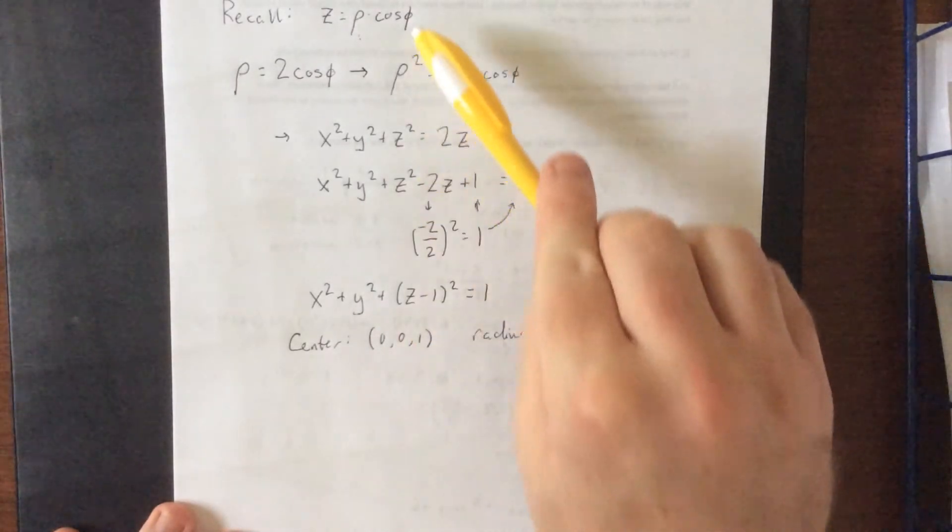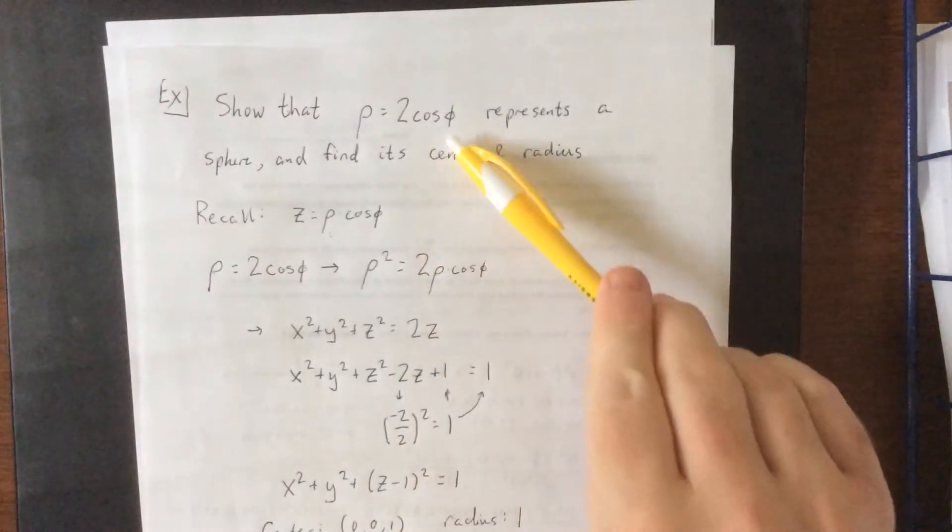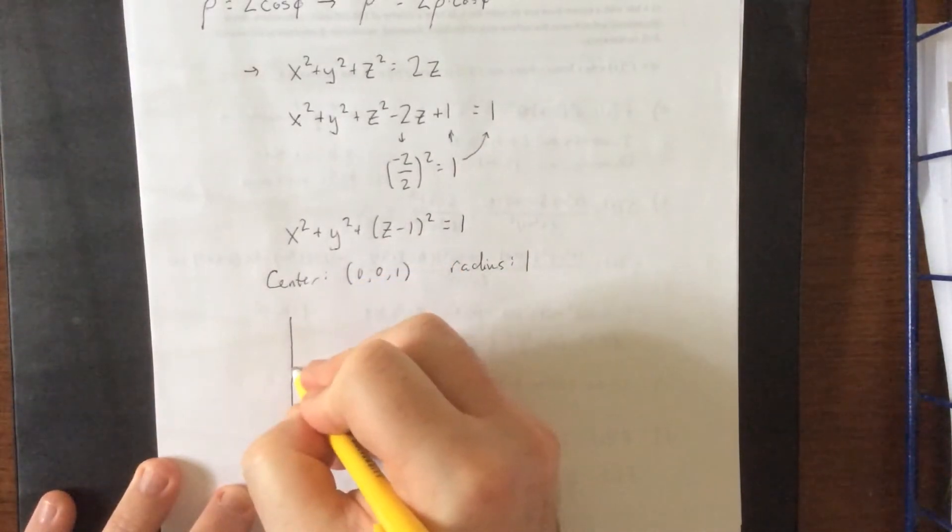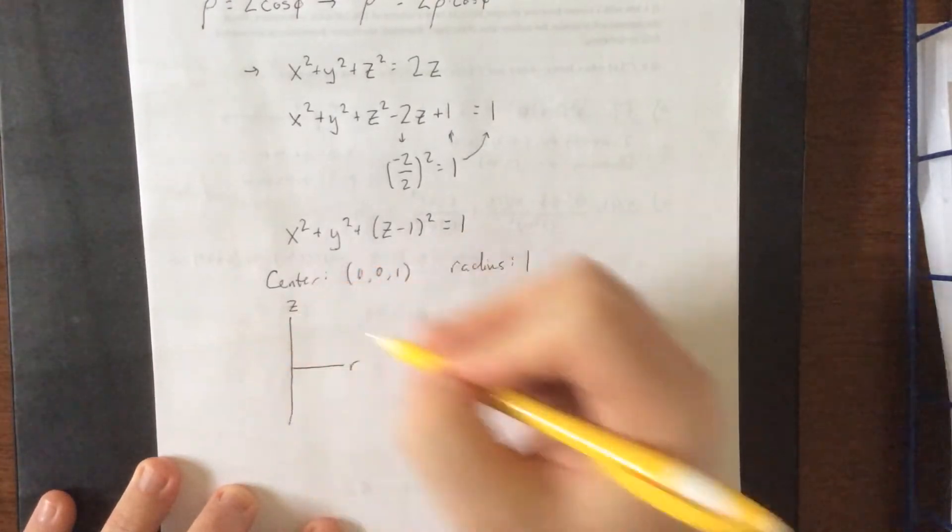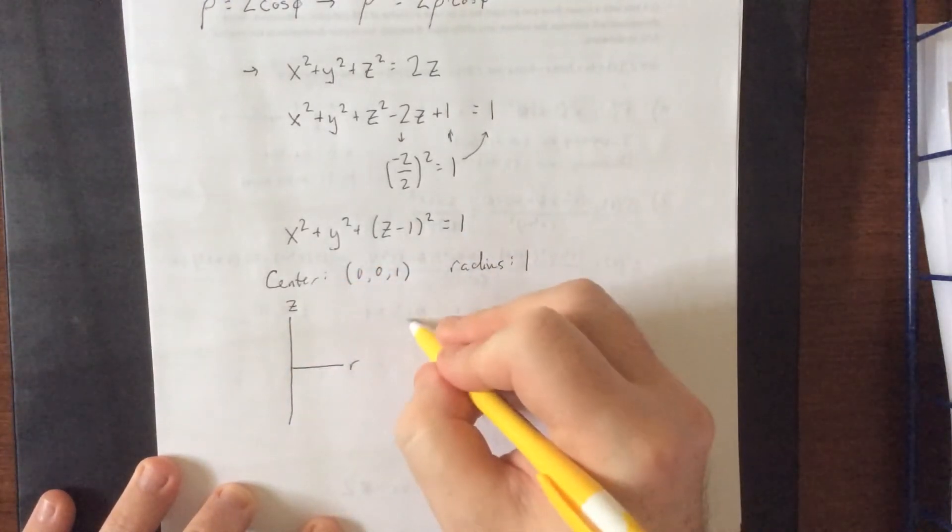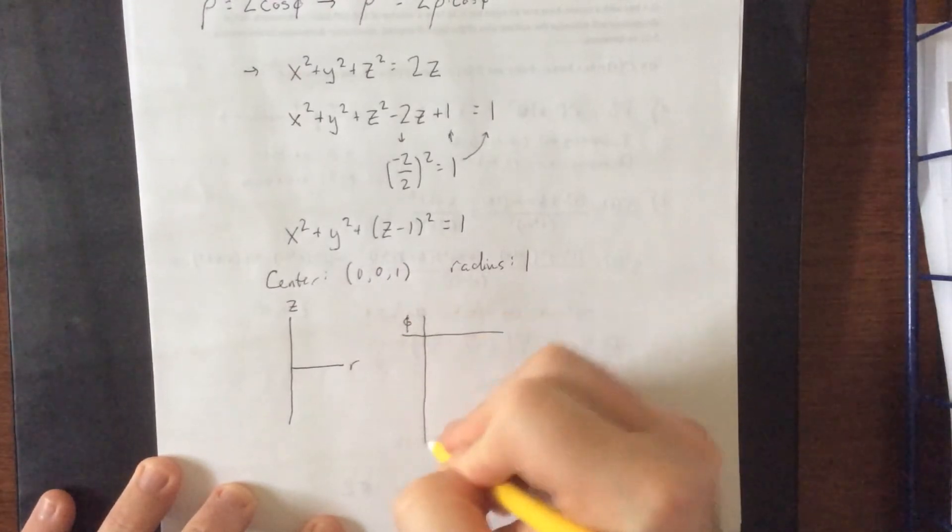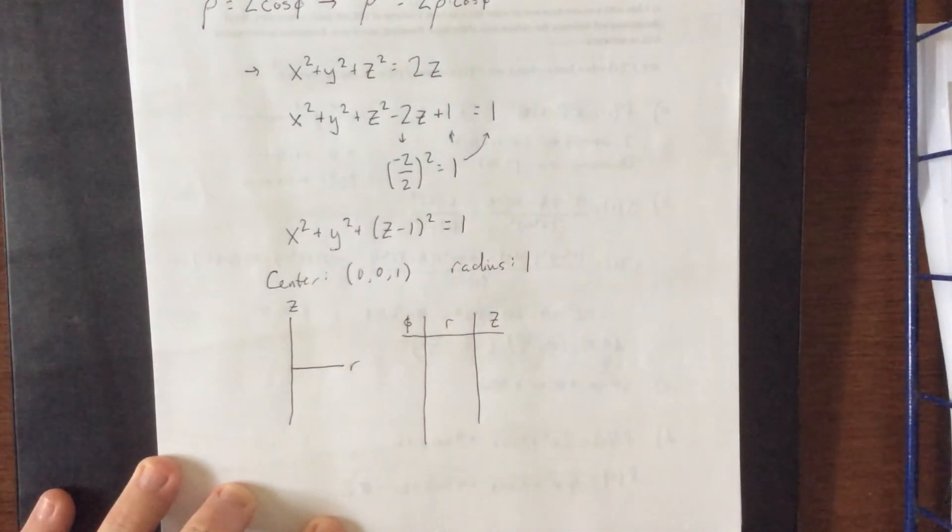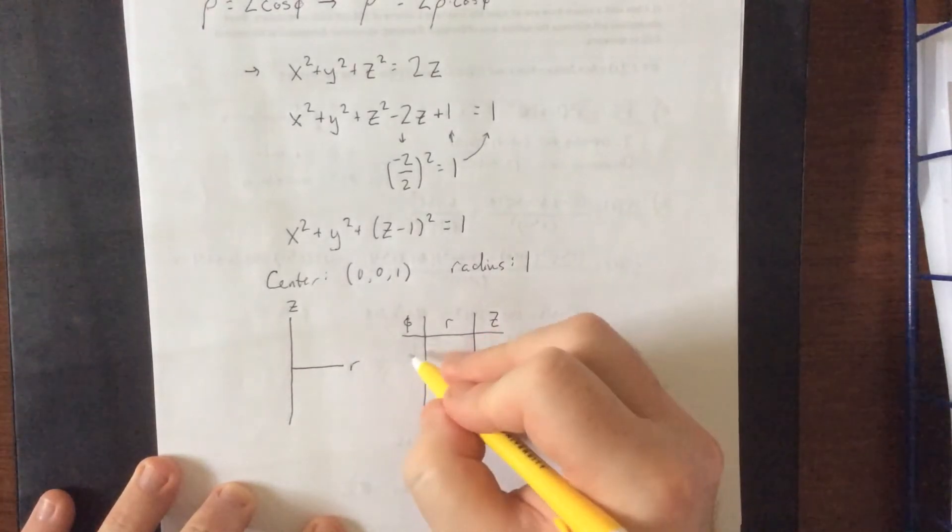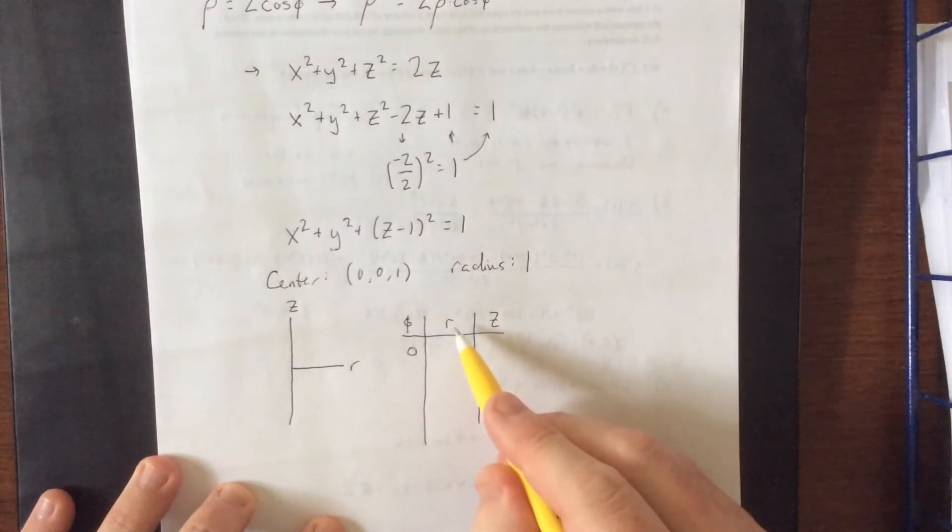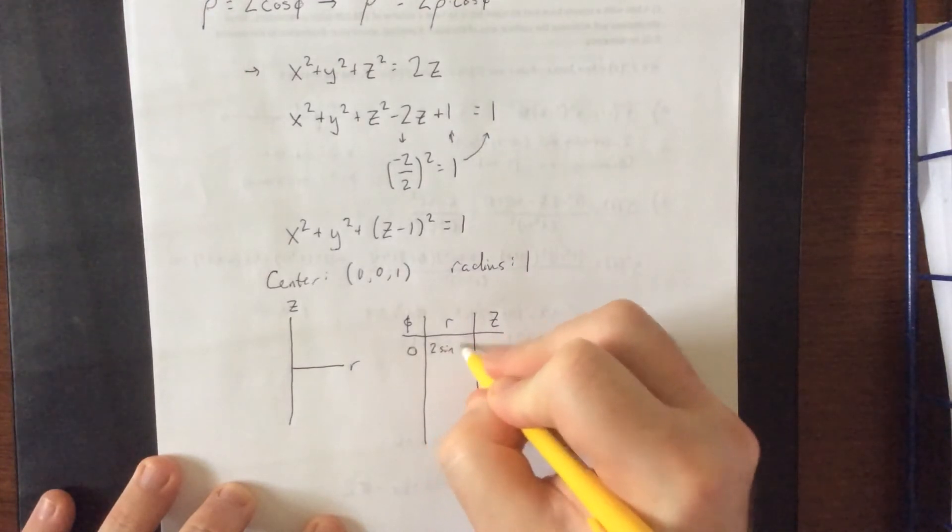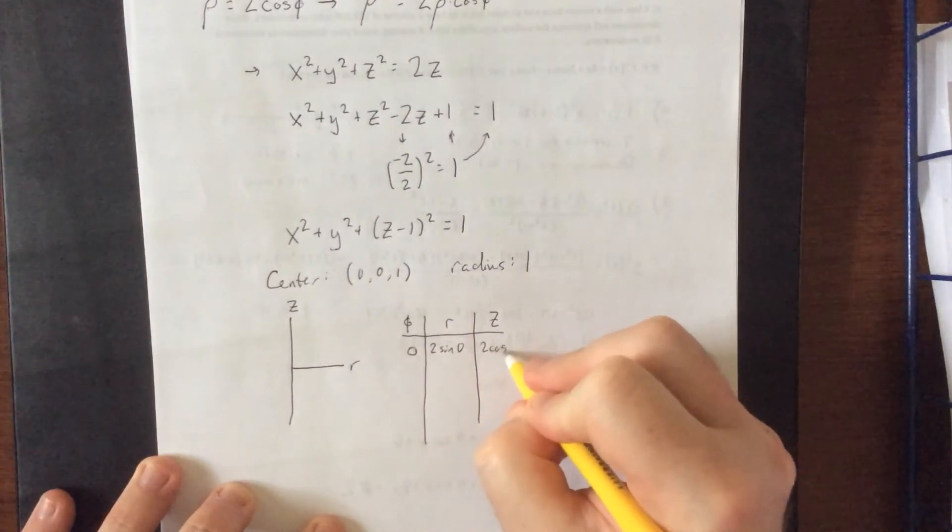Now if you did want to try to sketch what this looks like in the Rz trace, then we could probably figure it out using a couple of points in here. So for example, we could do a phi table and then try to figure out what our R value would be as well as what our z value would be. If you start with phi is equal to 0, you're going to get that R is equal to 2 times the sine of 0.